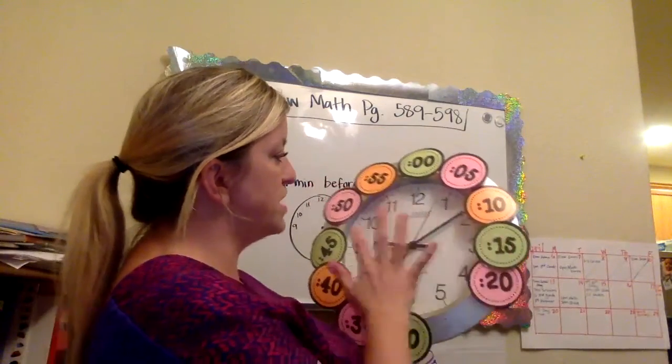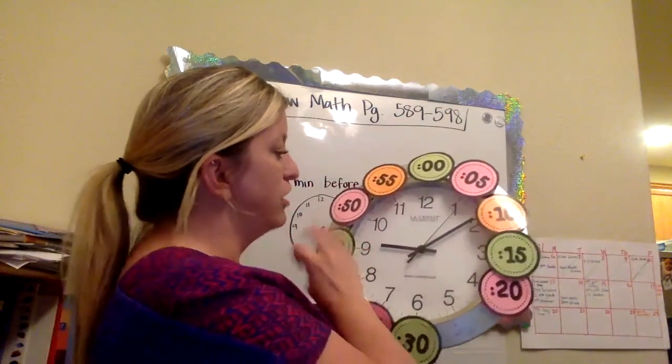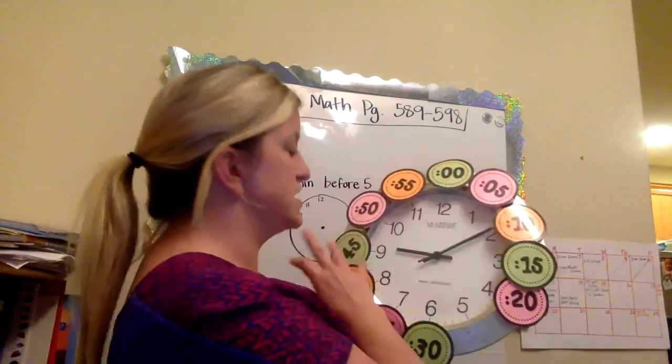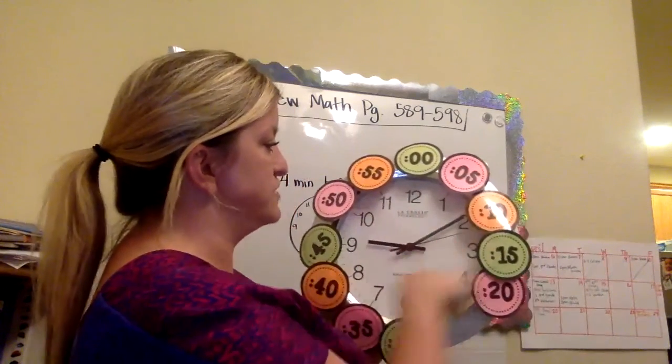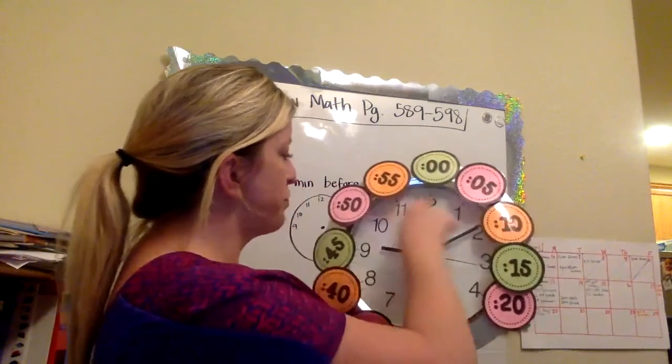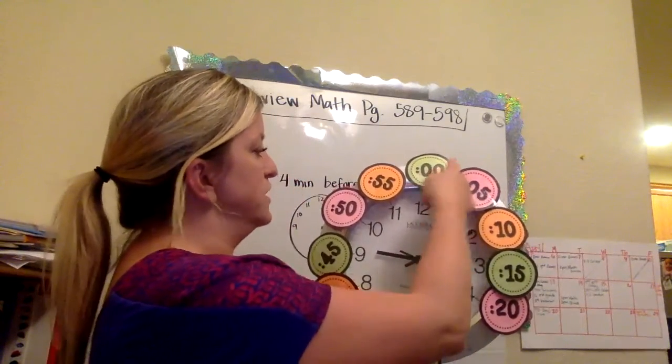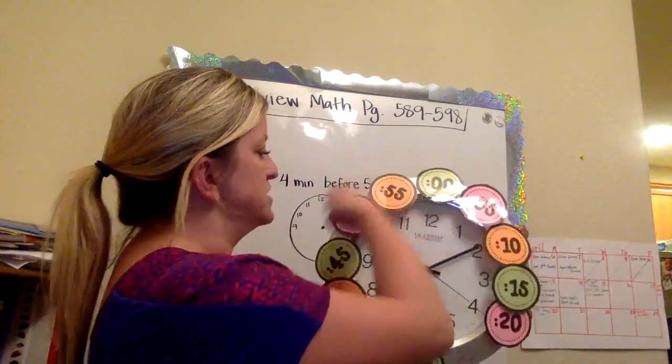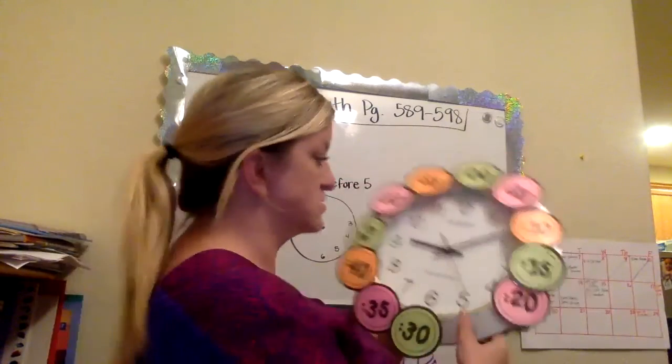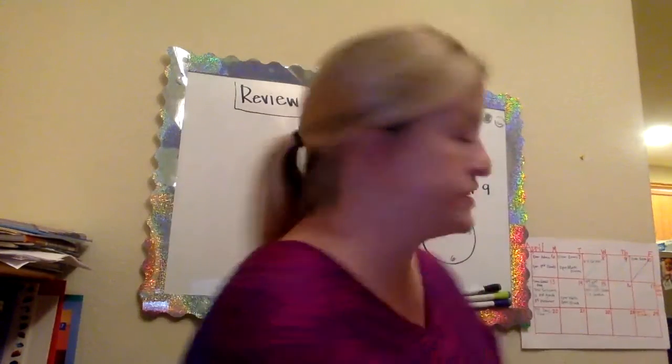Same thing but opposite for when you say it is 50 minutes before 10. So right now it would be 50 minutes before 10. 60 minus 10 is 50. If it's before, then I start at the 10 and I go this way. I go backwards, counterclockwise is what that's called. So let me show you on the dry erase board.